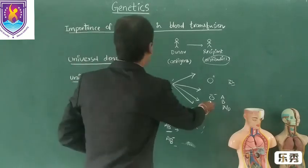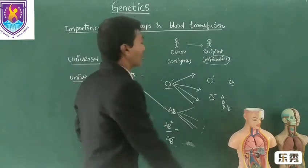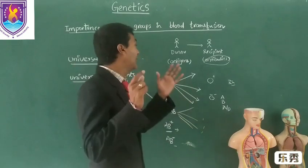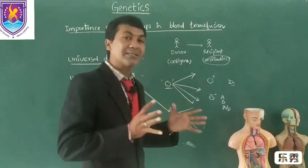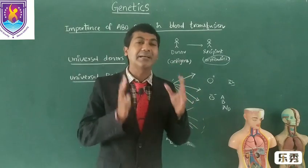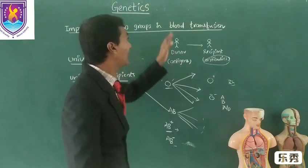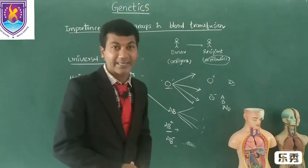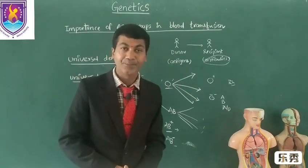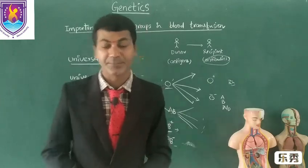So to summarize: O negative are universal donors and AB positive are universal recipients. This we must take under consideration while doing blood transfusion. Thank you very much.